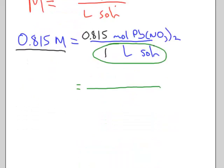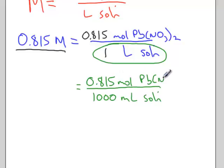And that relates to liters by the fact that 1,000 milliliters is equal to 1 liter. So if I rewrite this denominator as 1,000 milliliters of solution, I haven't changed the amount of solution I'm talking about, which means I haven't changed the number of moles. I still have 0.815 moles of Pb(NO3)2.